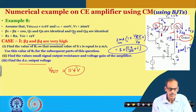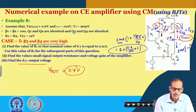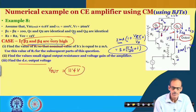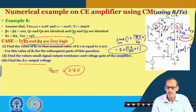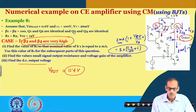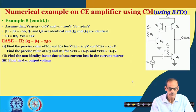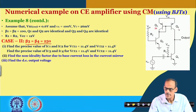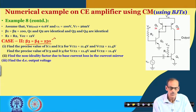In the next numerical example — a continuation of this same example — we consider a finite beta value for transistors Q3 and Q4. This gives a situation where we need to consider mismatch of the two currents, and then we can find what will be the change in the output voltage. In the next slide, transistors Q3 and Q4 have beta equal to 250.